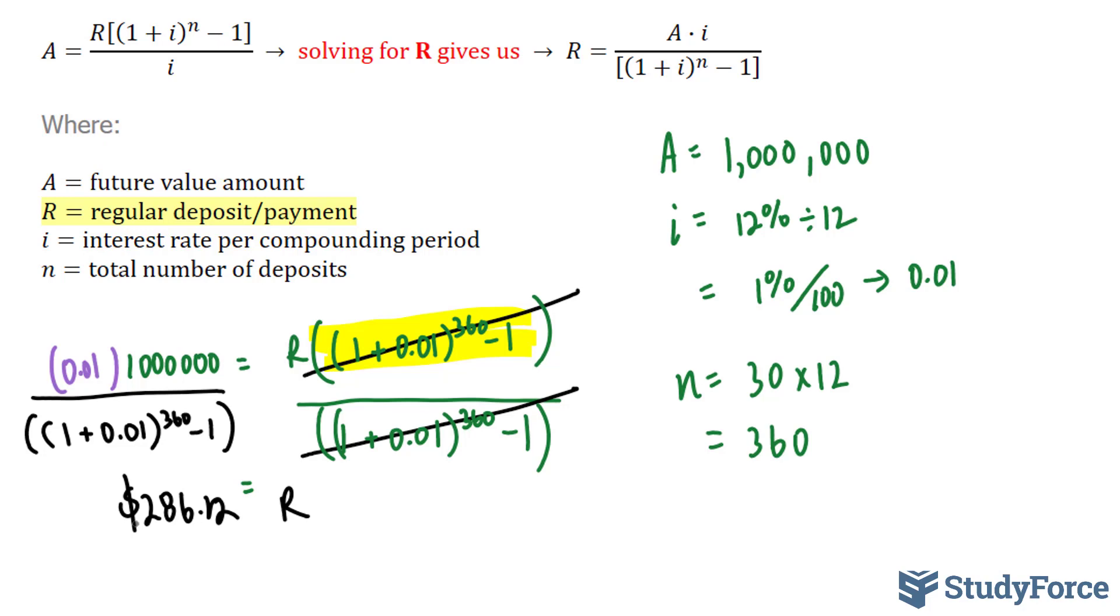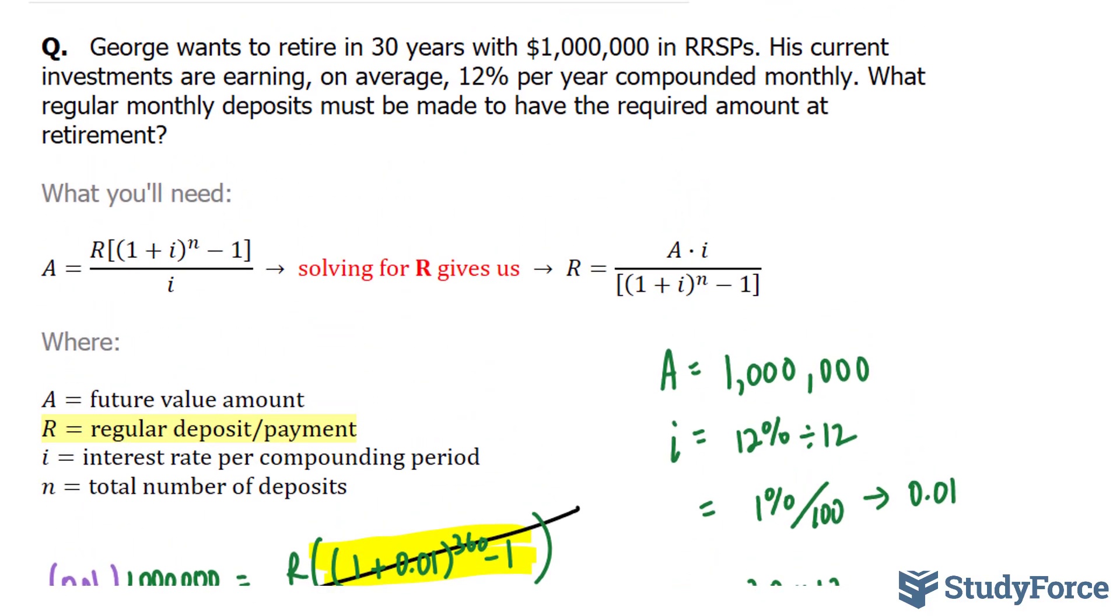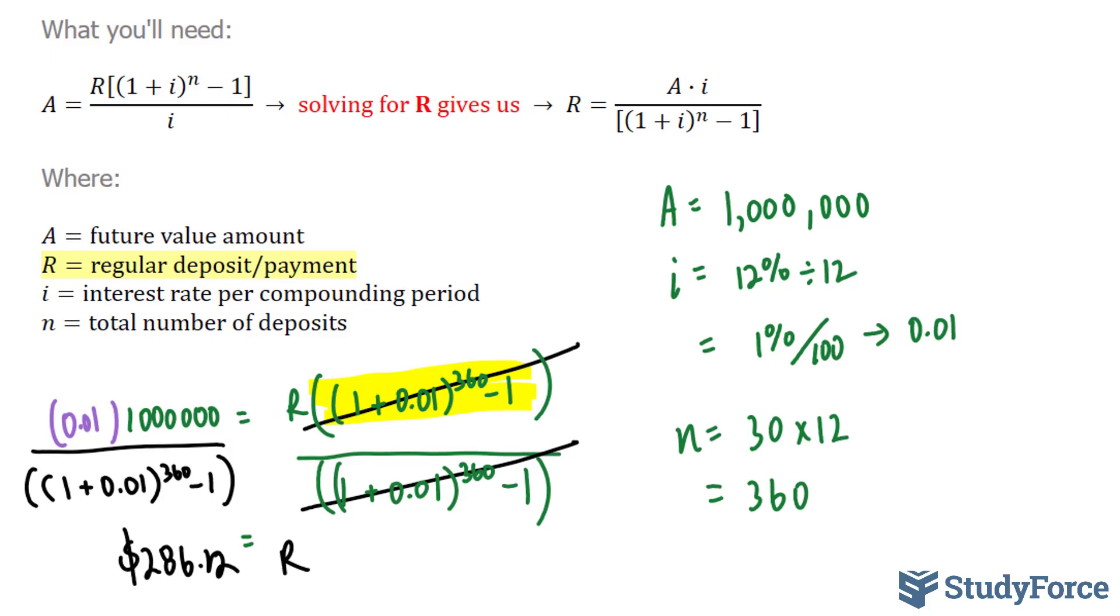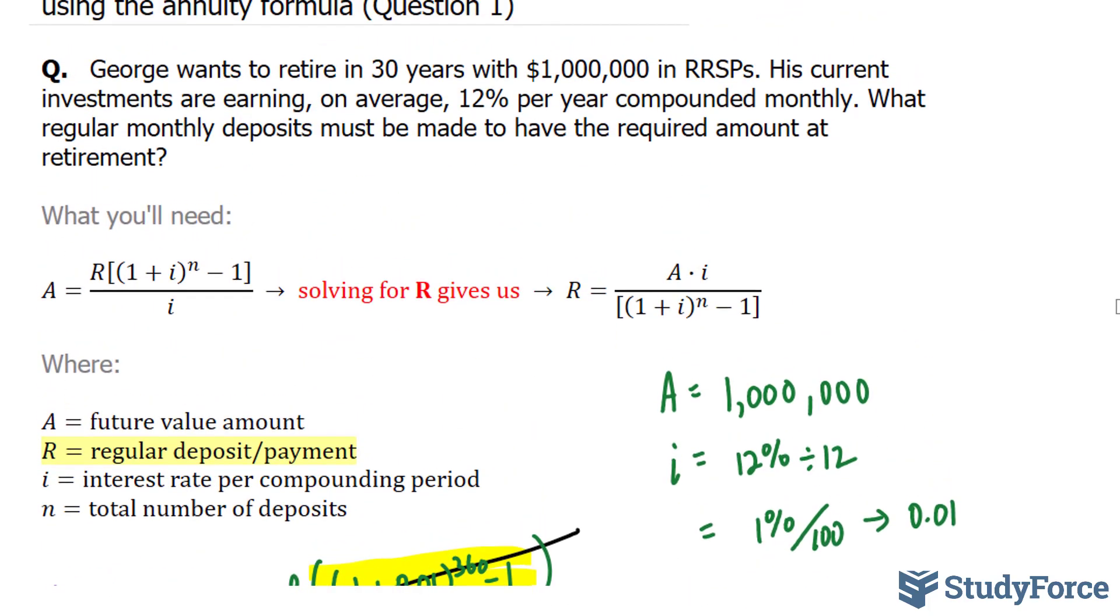So what does this tell us? This tells us that in order for George to have $1 million in RRSPs by 30 years, he has to put in a value of $286 and some change every month for the next 30 years. Now that's pretty good, because 12% interest is quite high. And if you can get 12% per year compounded monthly, then I would do the same thing.